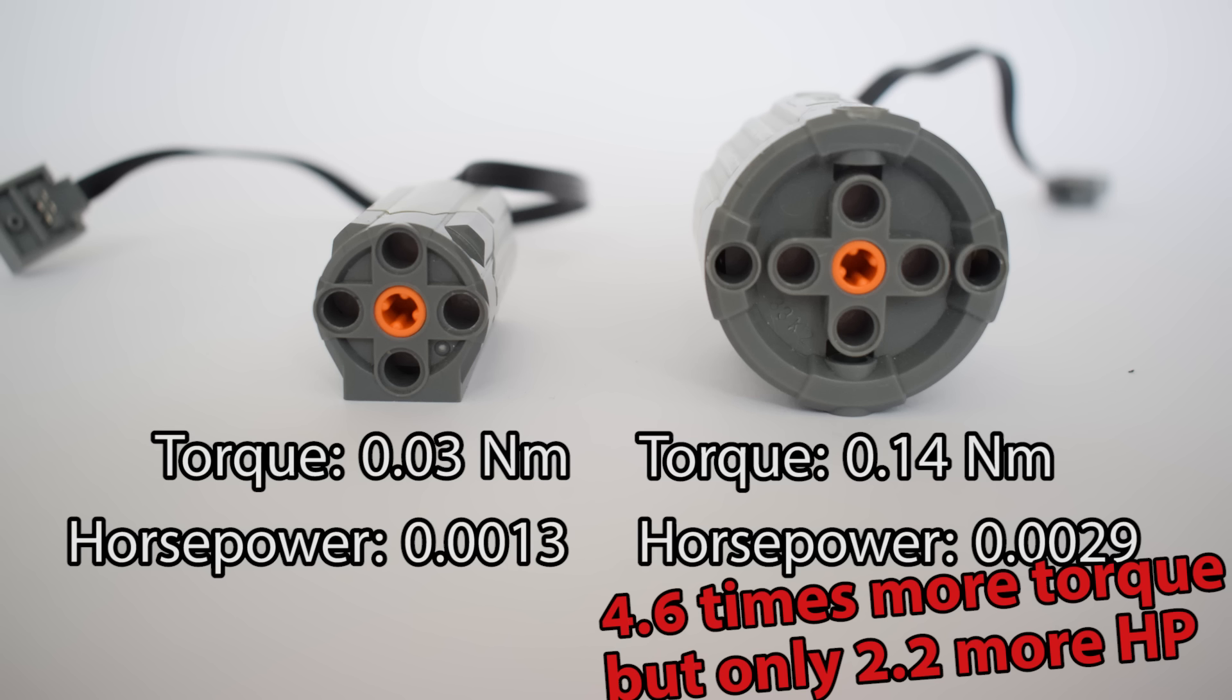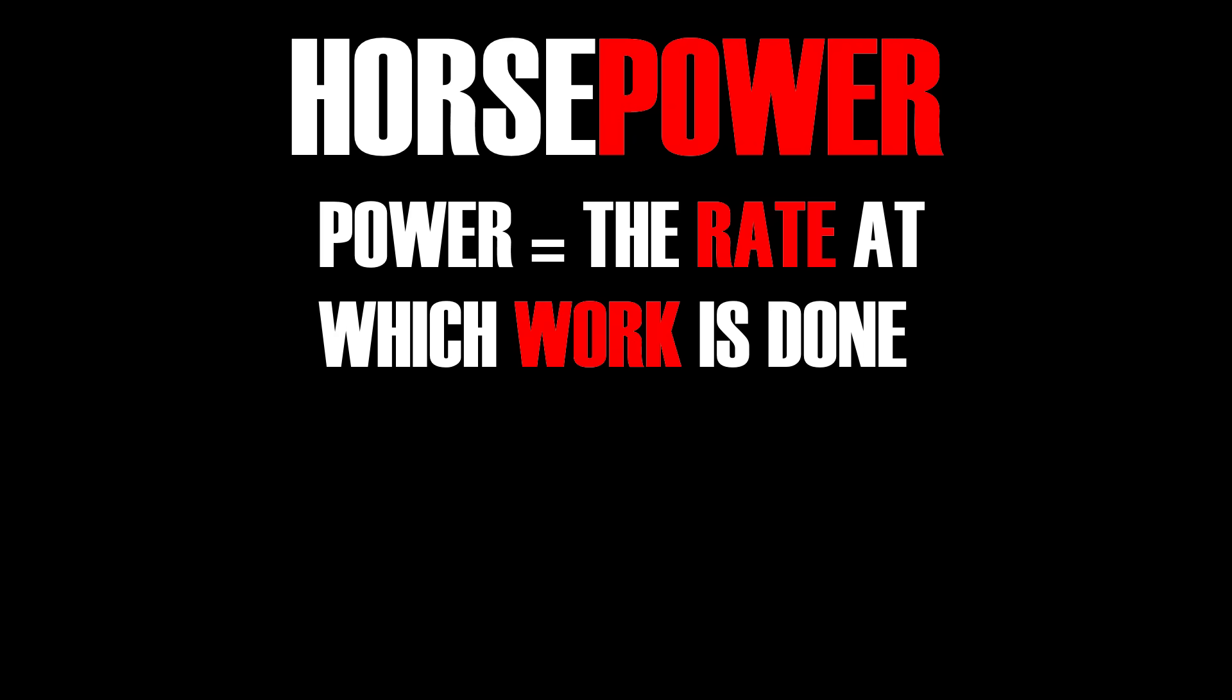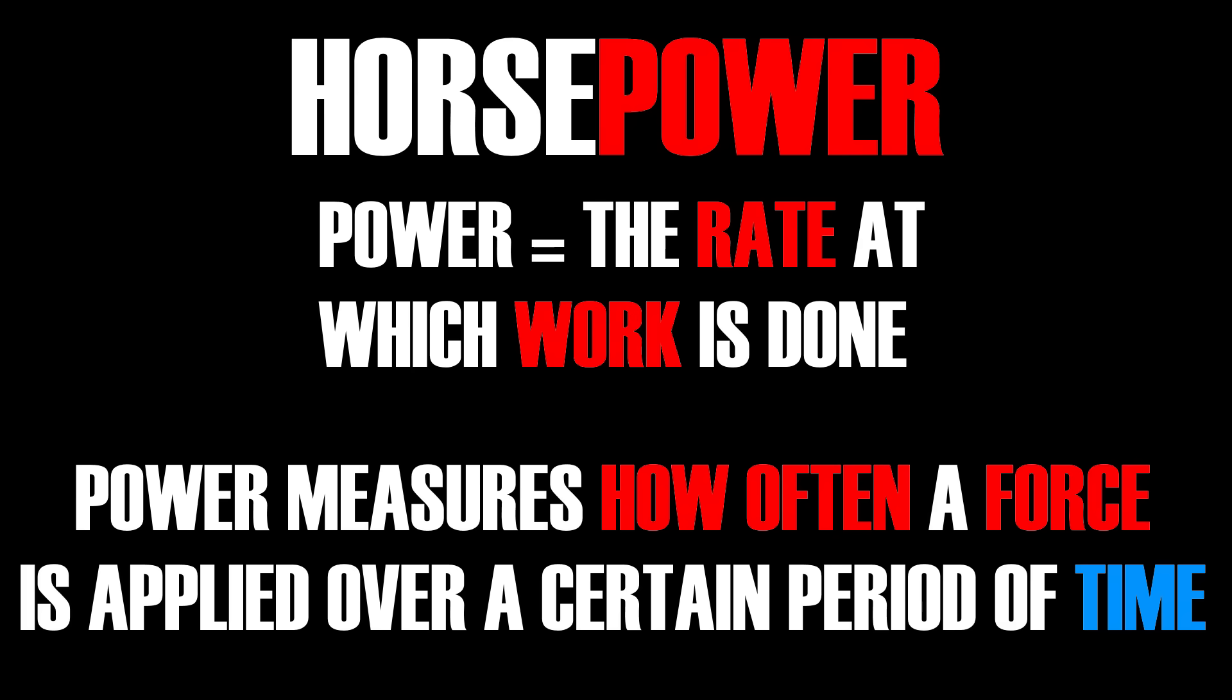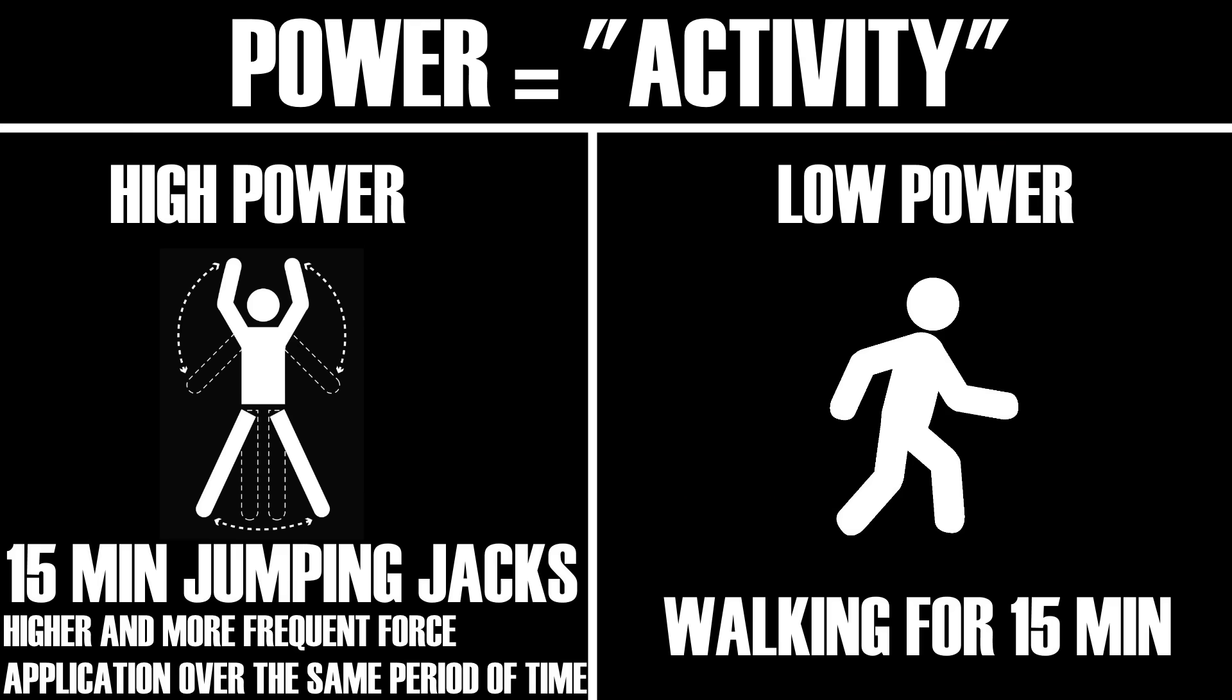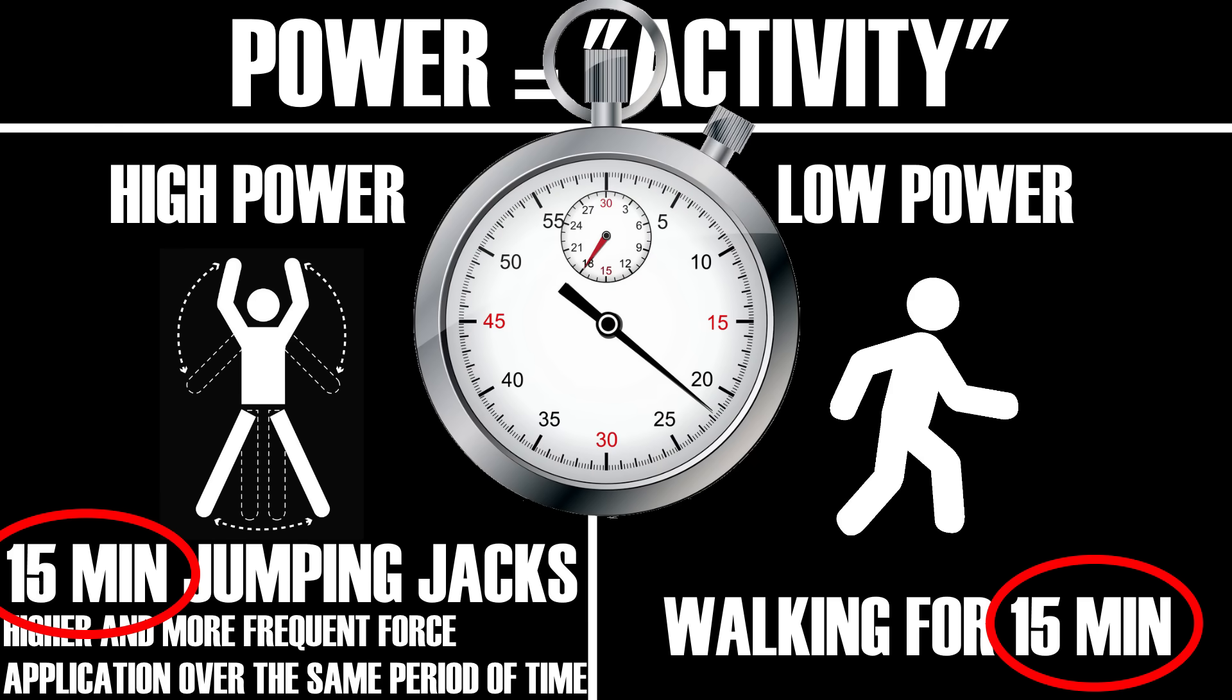Well to understand how this happens, we have to understand what horsepower is. The key word in the word horsepower is power. What is power? Power is the rate at which work is done. In more simple terms, power measures how often a certain force is applied over a given period of time. You could even call power activity. It measures how many times you can repeat the same action over a given period of time. This means that power introduces time into the equation.